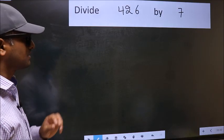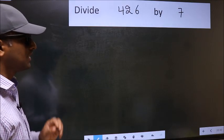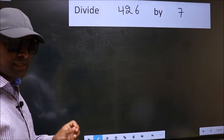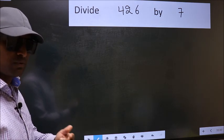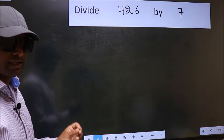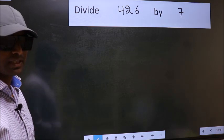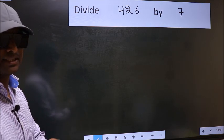Divide 426 by 7. While doing this division, many do this mistake. What is a mistake that they do? I will let you know. But before that, we should frame it in this way.